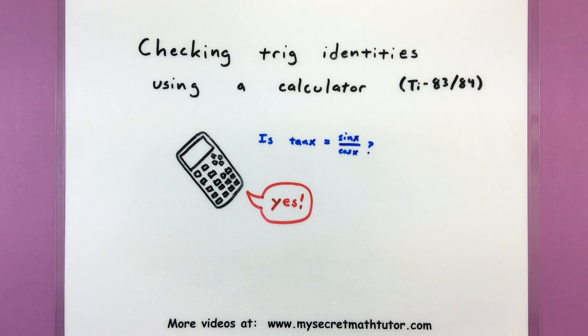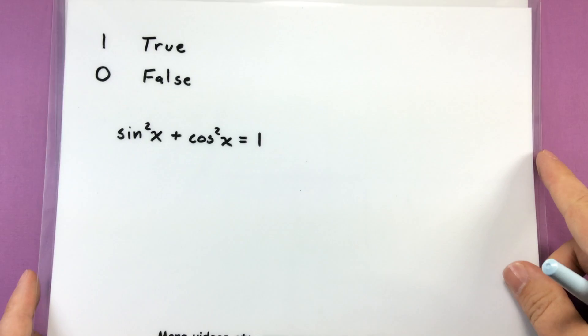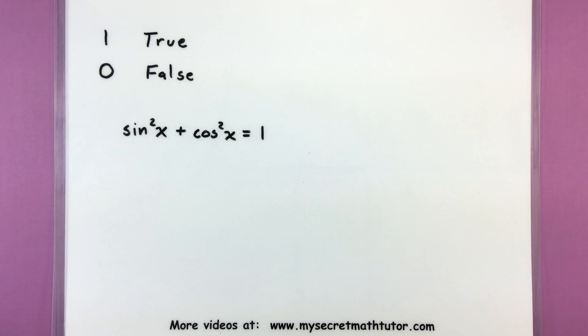The idea is that maybe you're working with a trigonometric expression and you're working to simplify it. As you know, the process can take quite a while and involve lots of work. And when you're done, sometimes you look at your answer and say, I don't know if this is right or wrong. I might have made a small mistake along the way. So you can actually use your calculator to check whether that identity that you came up with is true or not by using the logic functions.